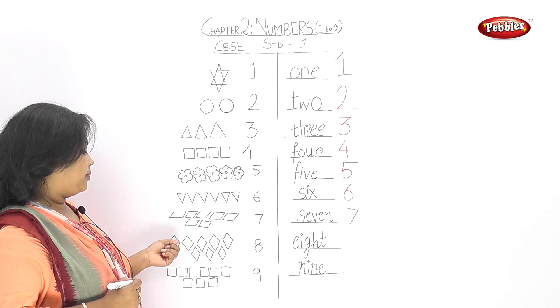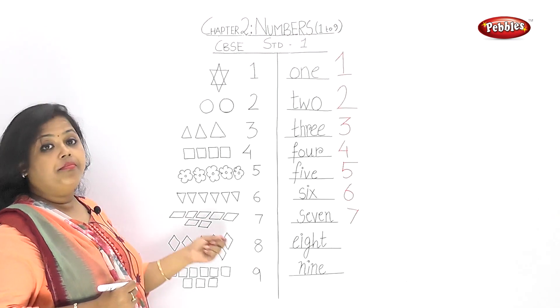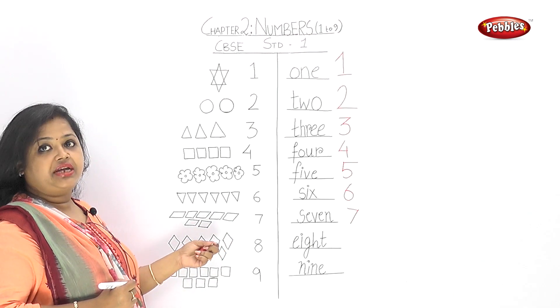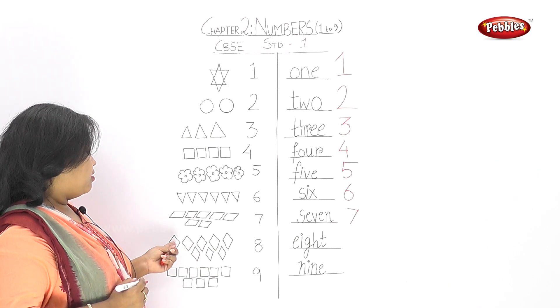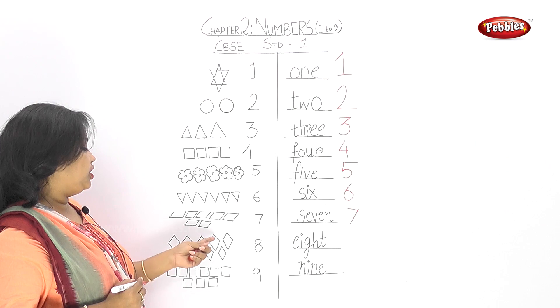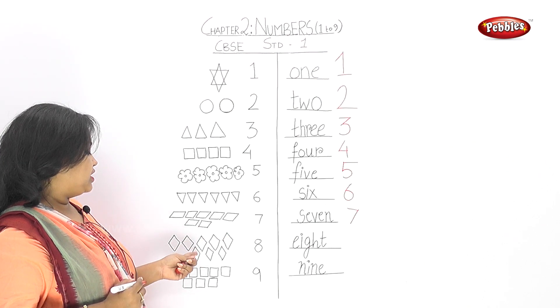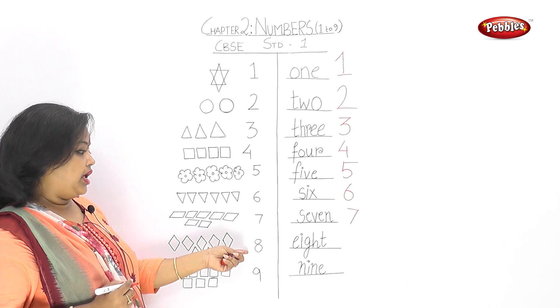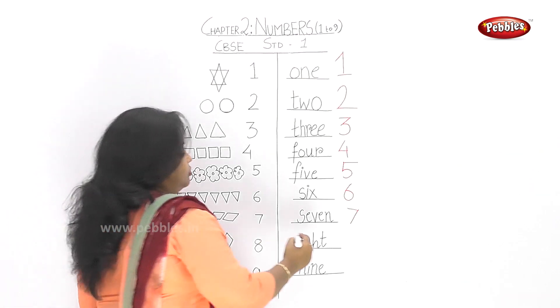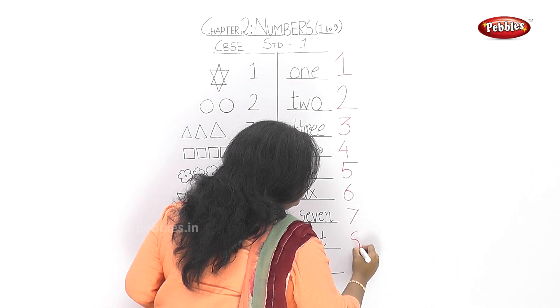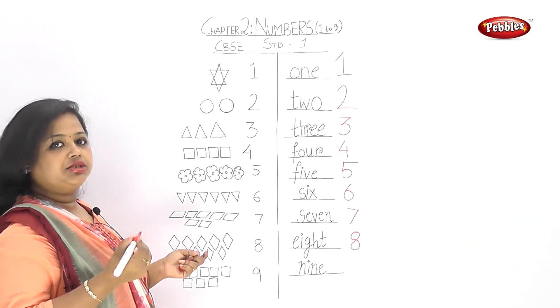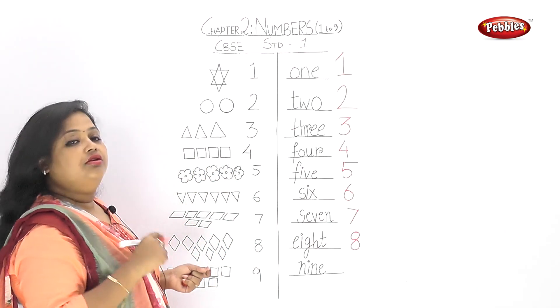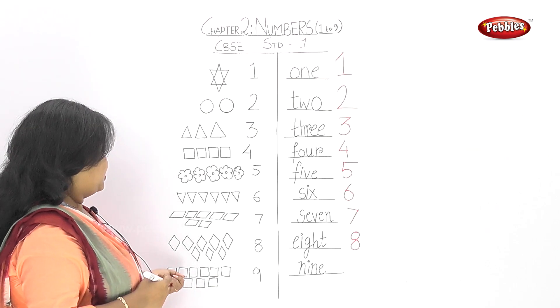This is a new shape. Its name is rhombus. It's a rectangular rhombus. How many rhombuses are there? Let's count. 1, 2, 3, 4, 5, 6, 7, 8. Eight rhombuses. So we write 8 here. This also looks fun, like round laddus.